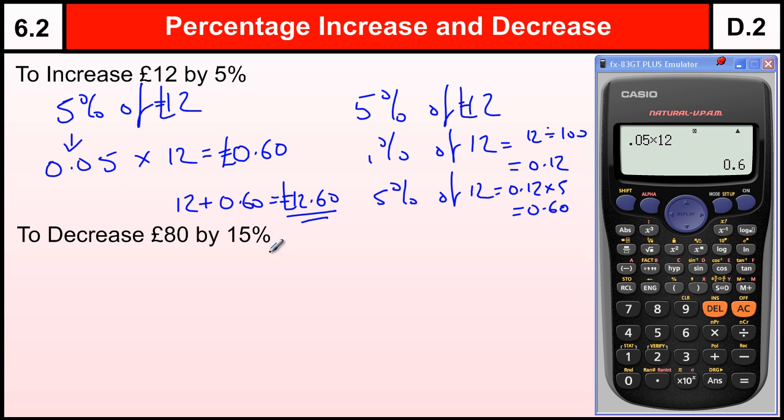So to decrease, same starting point, we work out the percentage of the amount in whatever way you want to do it. Essentially the two methods are similar. You divide by 100 and times by the amount. So the calculation is 80 divided by 100 times by 15, or we could do 15 divided by 100 times by 80.